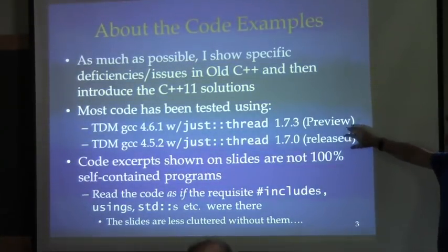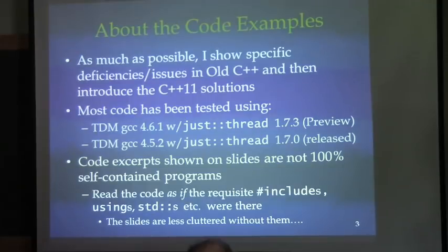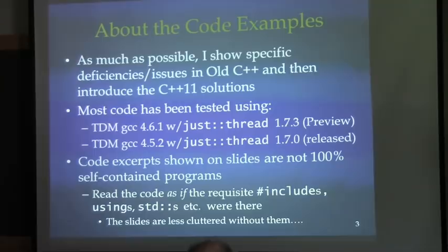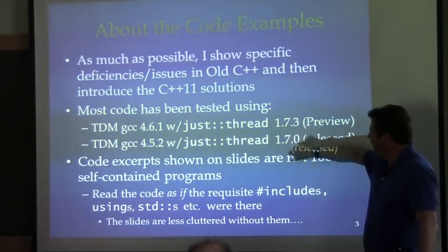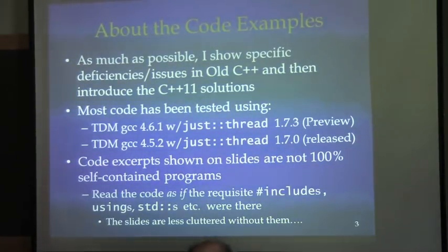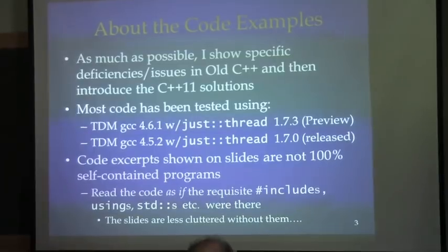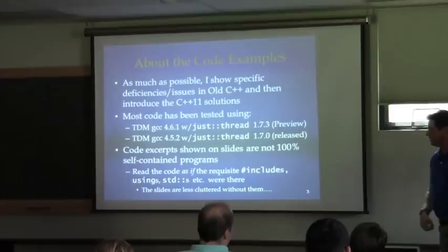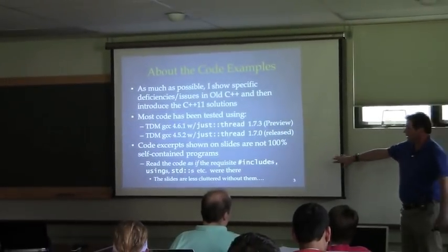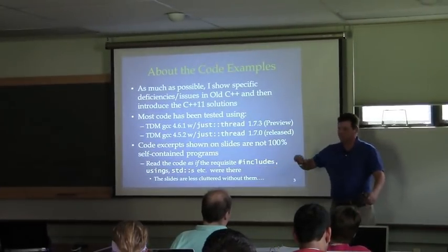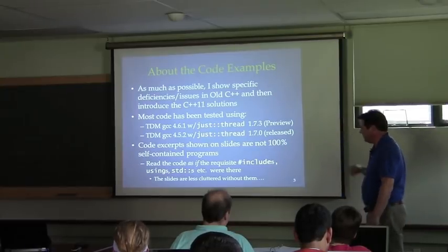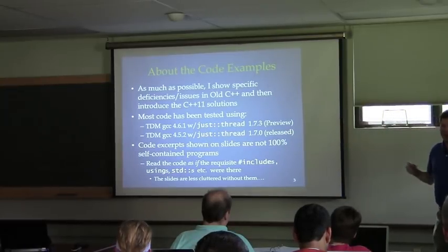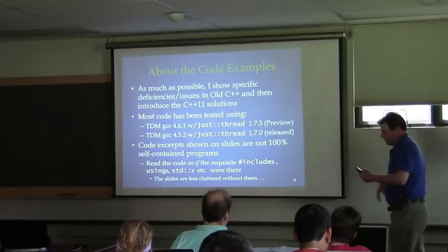In terms of the approach, rather than just showing features, I wanted to establish a rationale for some of these features by seeing how C++98 is deficient in certain areas, and then show the solution in C++11. I don't do that for everything, but that's the approach whenever I can get away with it without making things overly long. Most of these slides were developed about a year ago and tested on specific versions of GCC. The code excerpts are not completely self-contained programs, so just pretend the appropriate includes and std colons and usings are there.